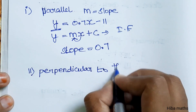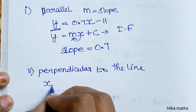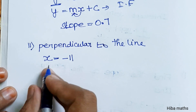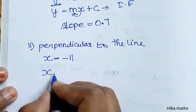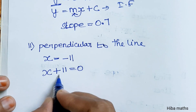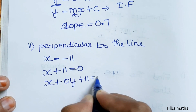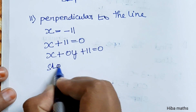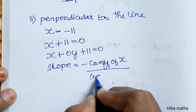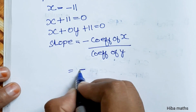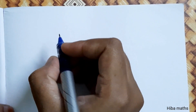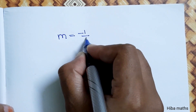Perpendicular to the line x is equal to minus 11. This is the intercept form. We can write: x minus 11 plus 11 is equal to 0. The slope is equal to the coefficient of x divided by the coefficient of y. So minus coefficient of x: x is equal to 1, divided by coefficient of y is equal to 0. Value is equal to minus 1 by 0.